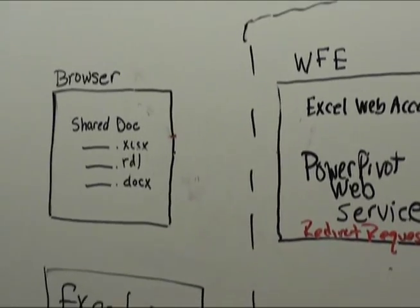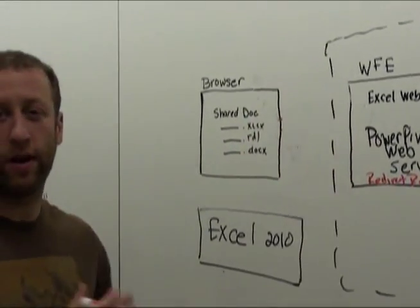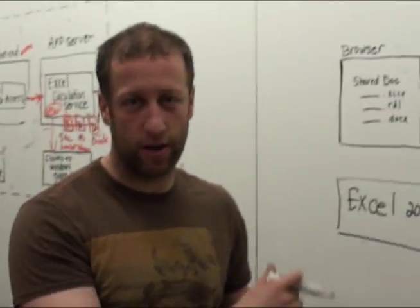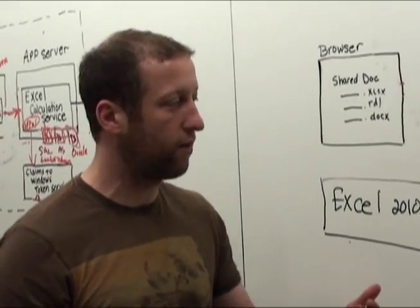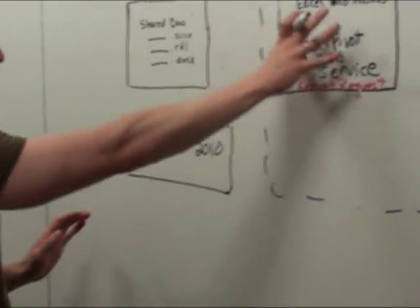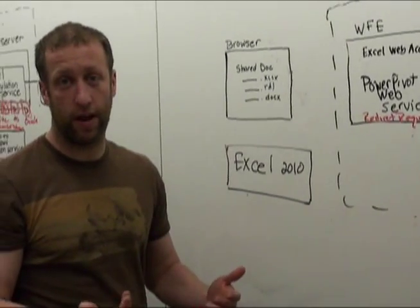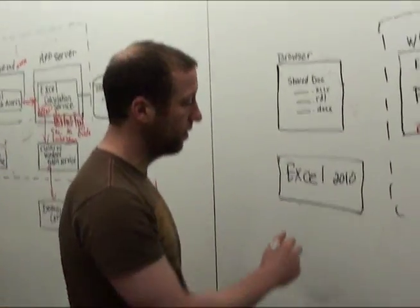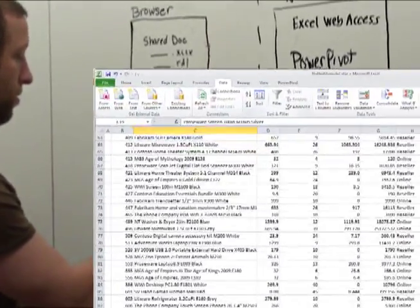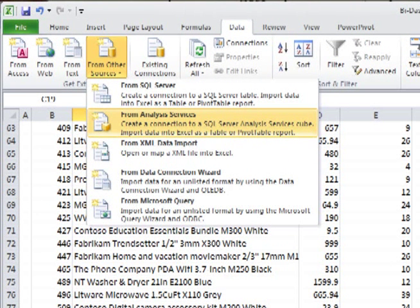The interesting scenario that it opens up is that after I've created this XLSX and uploaded it — we've already talked about how you can view it in browser and interact with it, and it interacts just like a normal Excel workbook would in Excel Services — you can now, after uploading this workbook, go in and take a tool like Excel 2010, which likes to import data from external data sources like AS. You can go to the data tab, import data, and choose SQL Server Analysis Services.